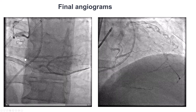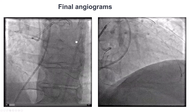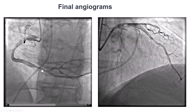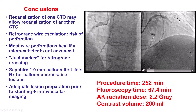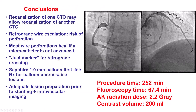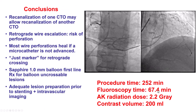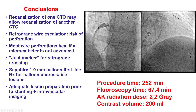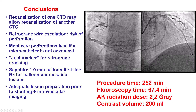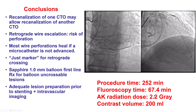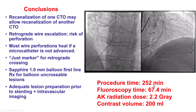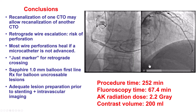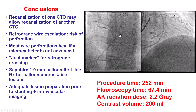Here are the final images — a good result in both the LAD and the right coronary artery. The patient did well. It was 67 minutes of fluorotime and 2.2 gray, which is remarkable given that the patient was so heavy with a BMI of 49. This is a testament to the new X-ray systems that can help reduce radiation dose.